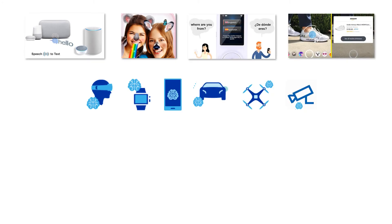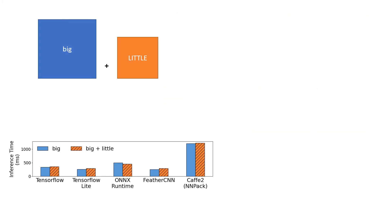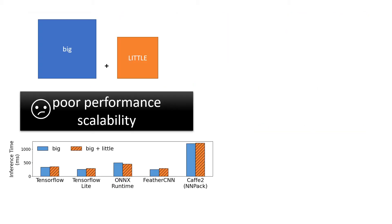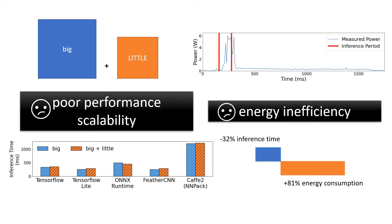On-device deep learning inference is getting prevalence. Asymmetric CPUs are the main computing unit. However, current on-device inferences suffer from poor performance scalability and energy inefficiency issues.